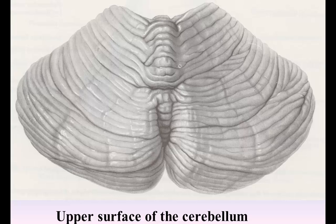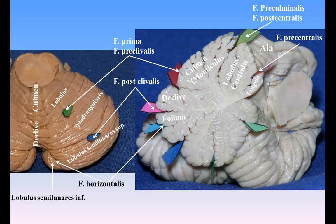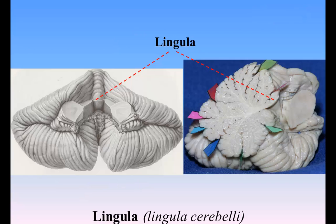The upper surface of the cerebellum is elevated in the middle and sloped towards the circumference, the hemispheres being connected together by a superior vermis, which assumes the form of a raised median ridge, most prominent in front, but not sharply defined from the hemispheres. The superior vermis is subdivided from before backwards into the lingula, the lobus centralis, the monticulus, and the folium vermis. Each of these, with the exception of the lingula, is continuous with the corresponding parts of the hemispheres: the lobulus centralis with the alae, the monticulus with the quadrangular lobules, and the folium vermis with the superior semilunar lobules.